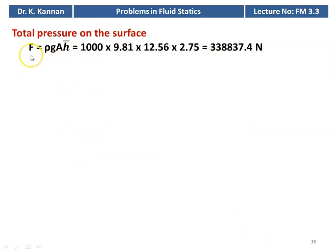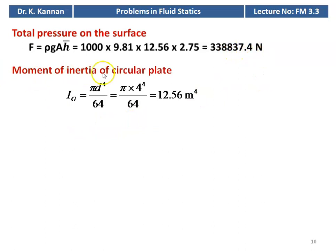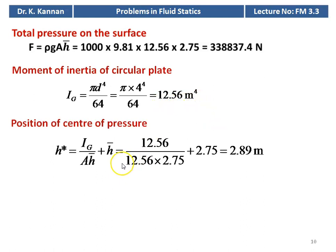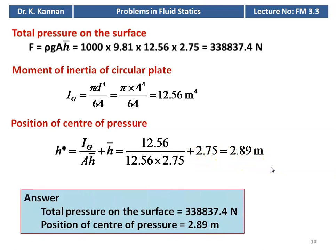The total pressure on the surface F equal to rho g A into h_bar, which is 1000 into 9.81 into 12.56 into 2.75 equal to 3,38,837.4 Newton. The moment of inertia of the circular plate I_g equal to pi d power 4 divided by 64, which is pi into 4 to the power 4 divided by 64 equal to 12.56 meter to the power 4. Position of center of pressure h* equal to I_g by A into h_bar plus h_bar equal to 12.56 divided by 12.56 into 2.75 plus 2.75 equal to 2.89 meter. Total pressure on the surface is 3,38,837.4 Newton and the position of the center of pressure is 2.89 meter.